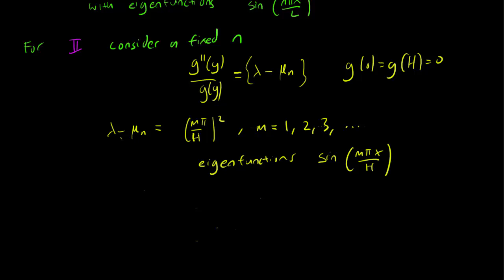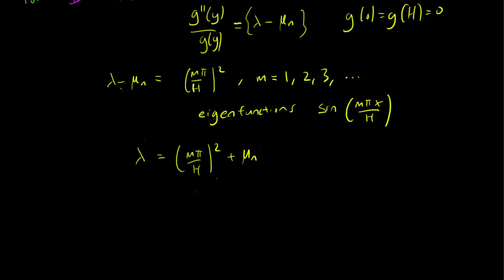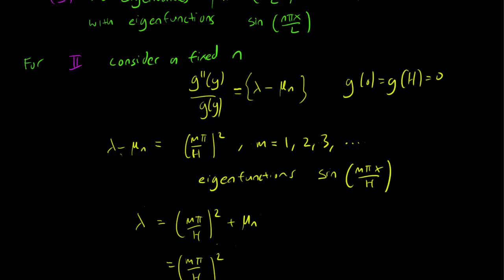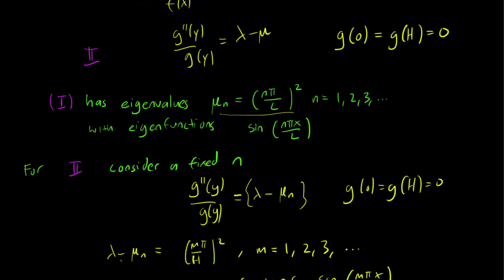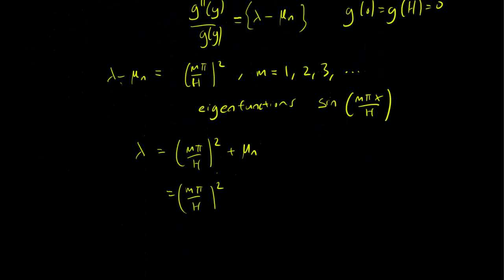So this means that our lambda must be of the form (mπ/H)² plus mu_n, or rather (mπ/H)². So remember what mu_n is, mu_n is just going to be (nπ/L)² plus (nπ/L)². So these are our lambda,